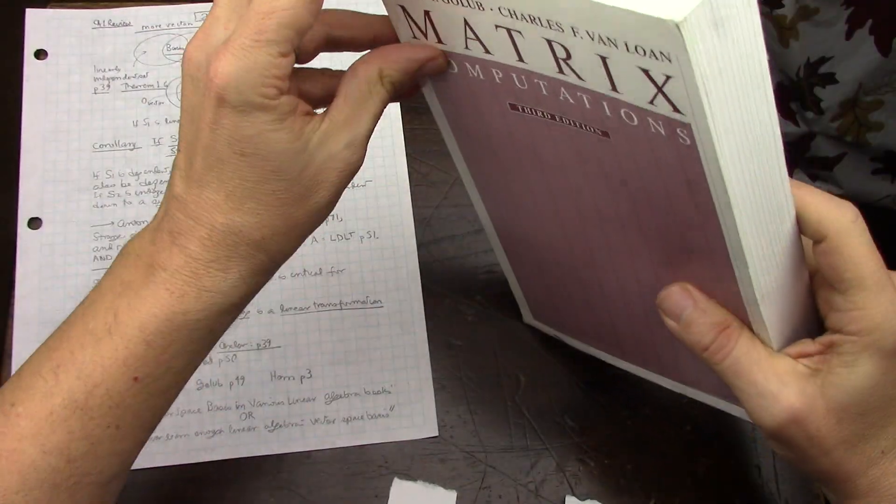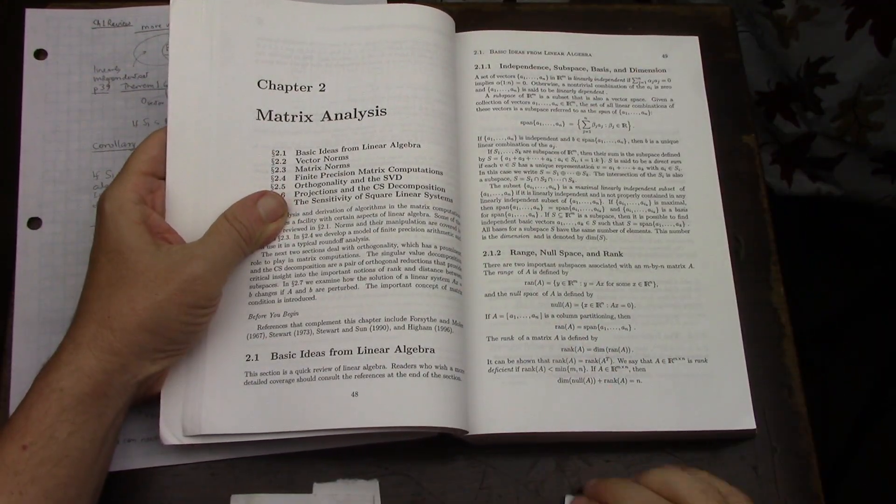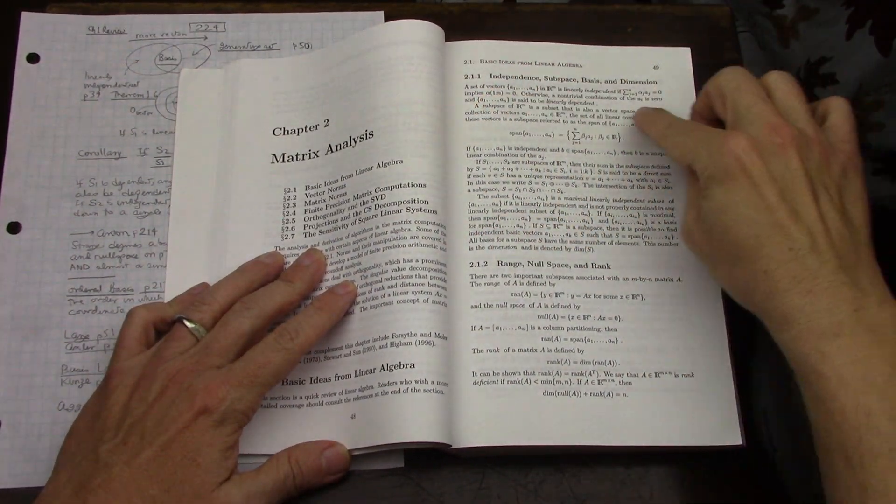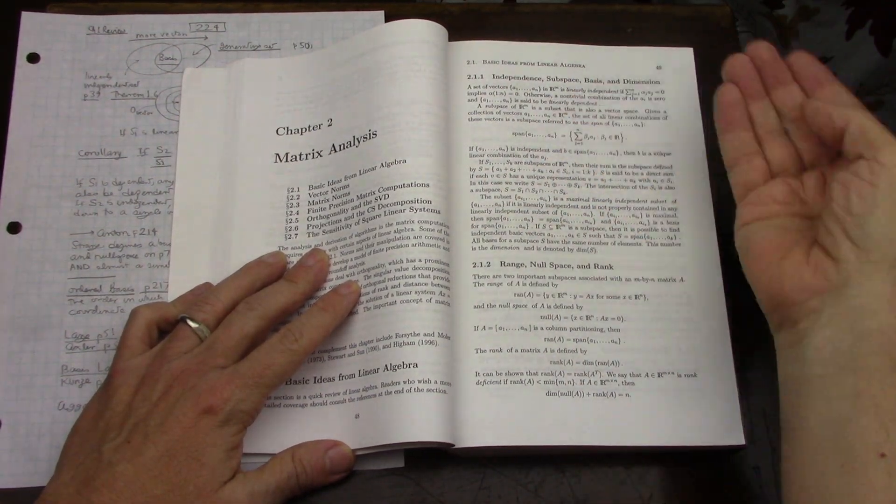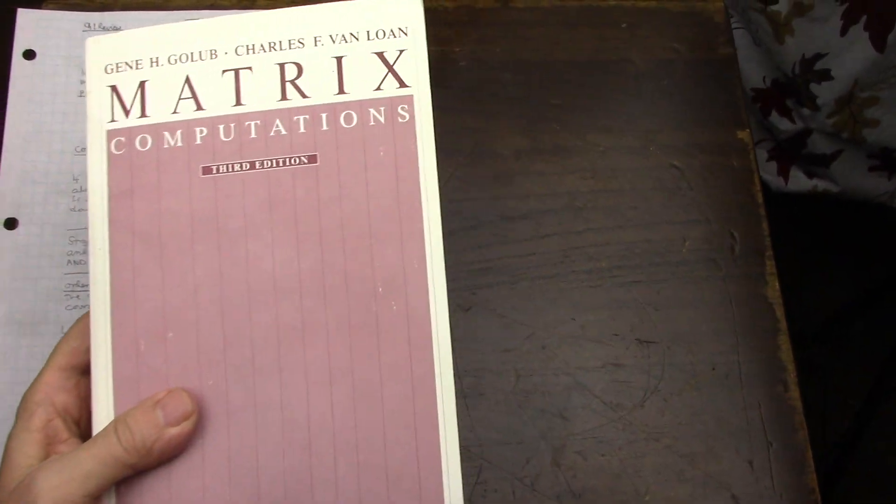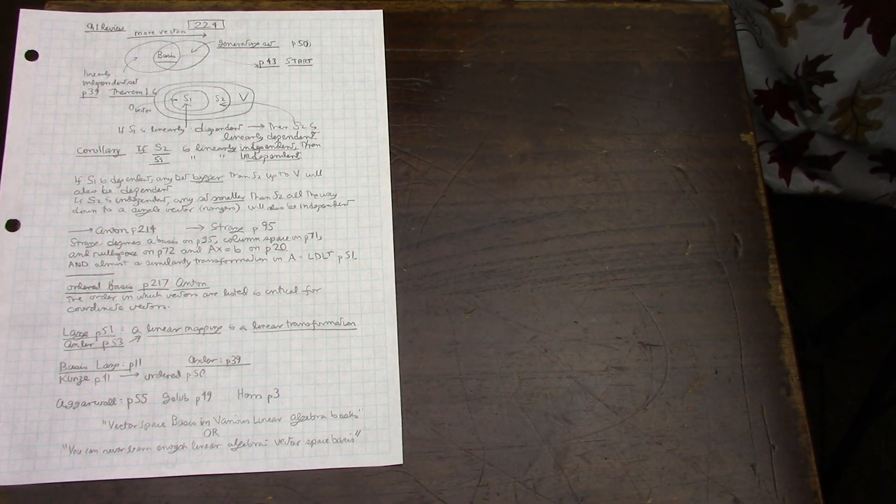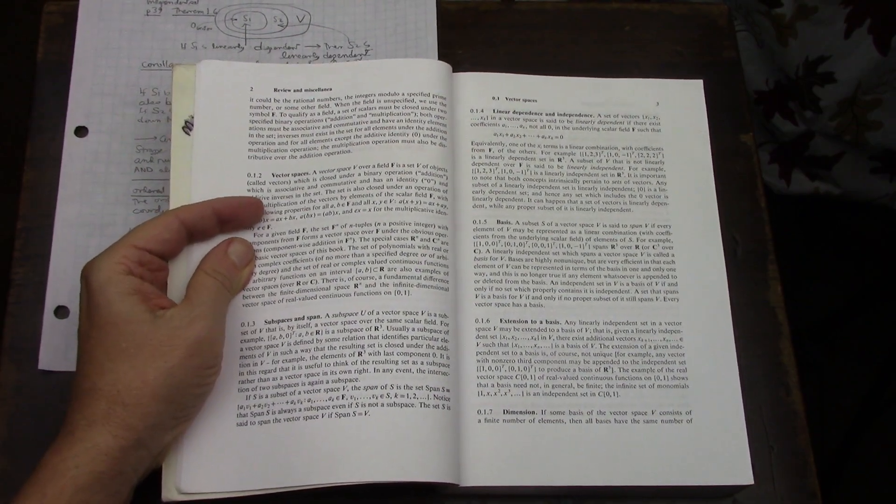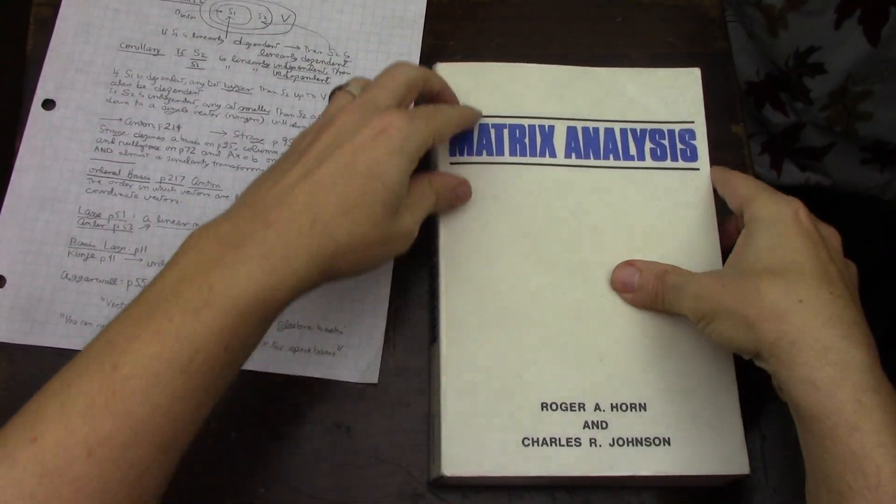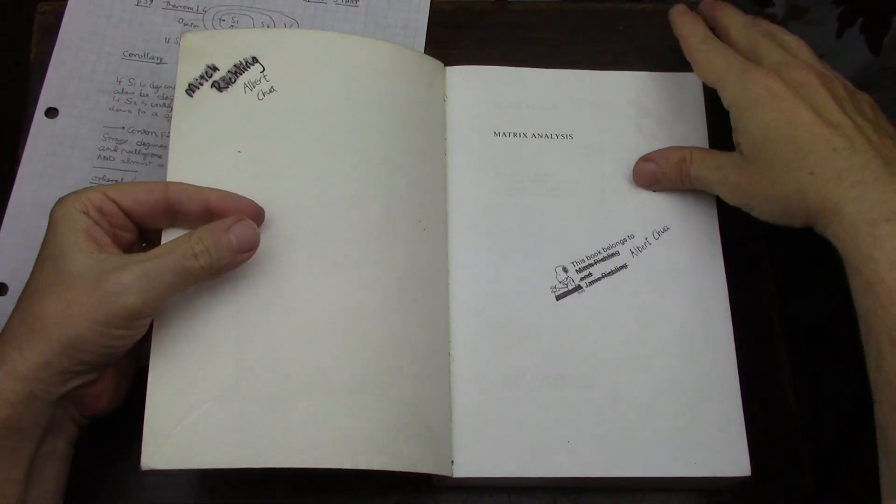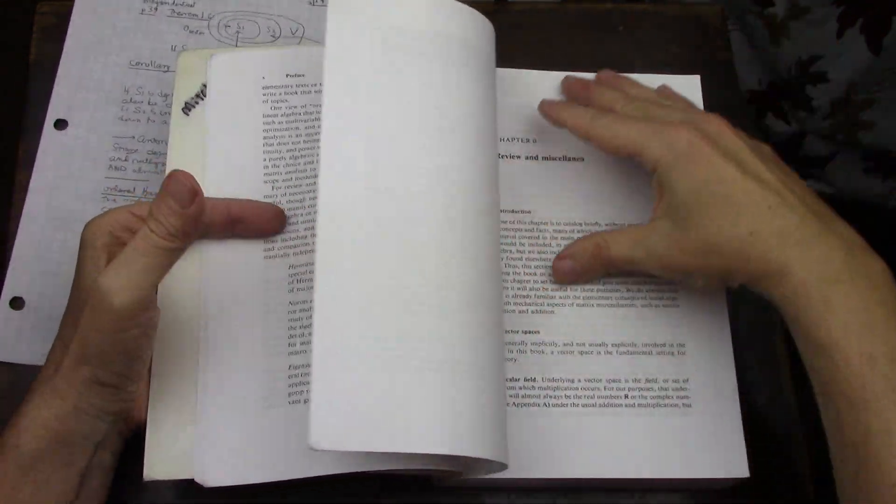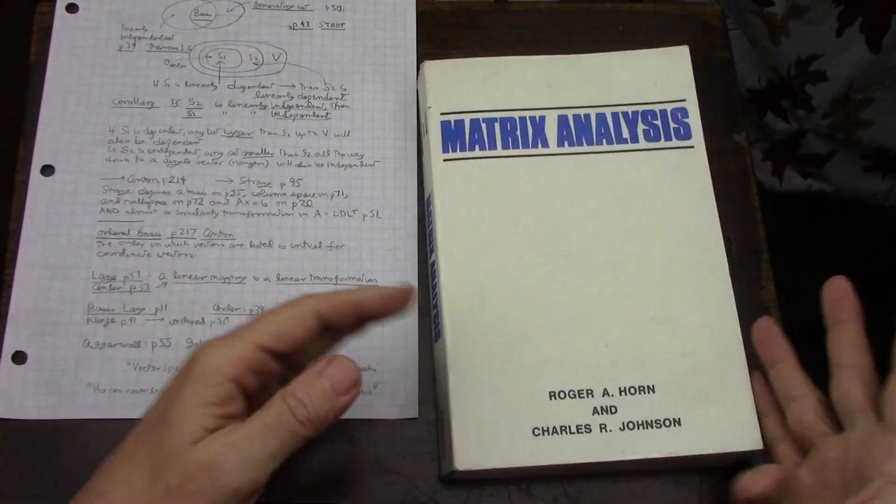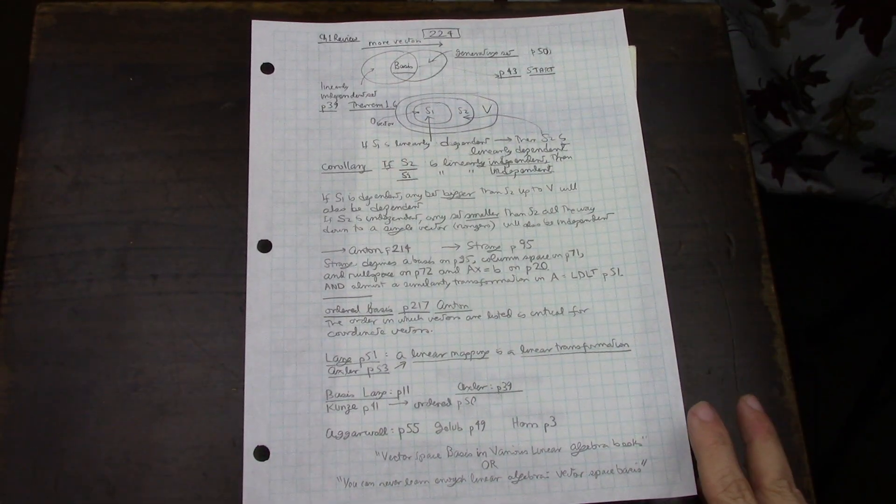In the case of Golub, if we go to page 49, that's another example of how an applied book will give it in a very succinct manner because it's just like, hey, in case you didn't know, here it is, but you should know. And sure enough, they go into other content. Finally, in the case of Horn & Johnson, it is on page 3, very early on in the book. Again, very brief definitions. So there you have it. That is the concept of basis in various linear algebra books.